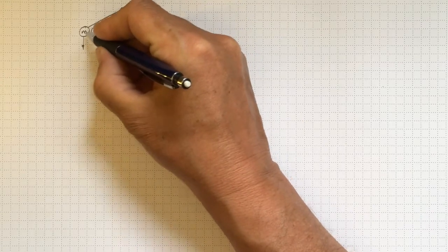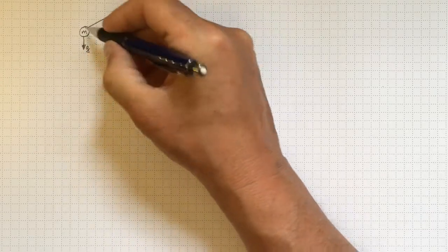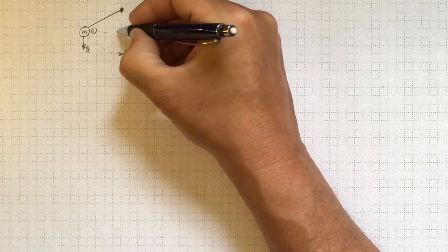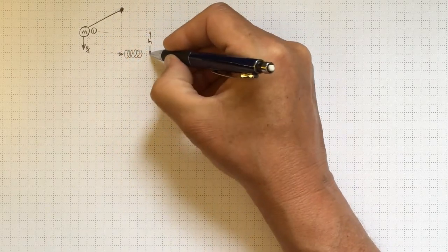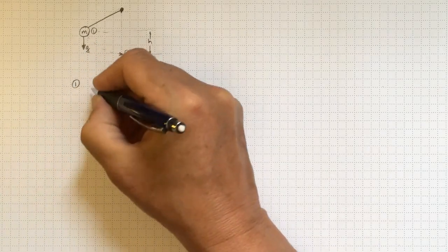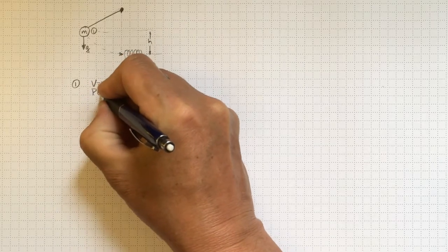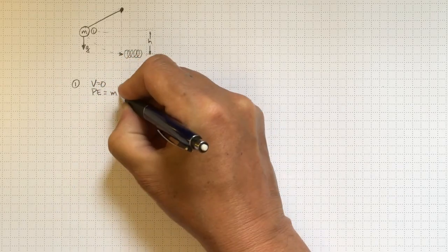First off, at position one, when it's not moving but it's subject to a force of gravity, it has potential energy that's proportional to the height it is above our datum point. So at location one, we have v equal to zero and we have potential energy equal to mgh.